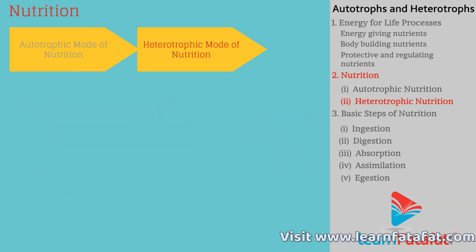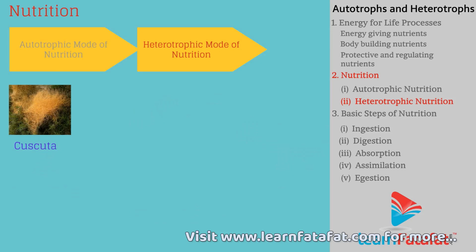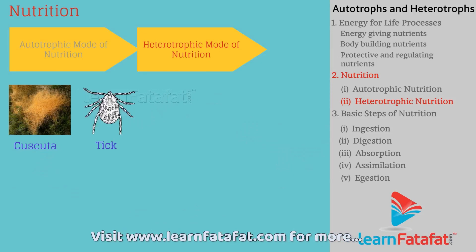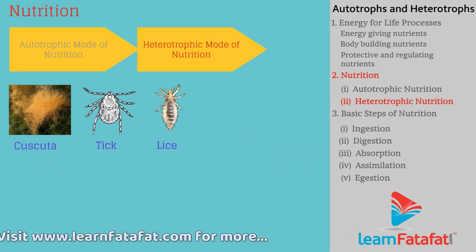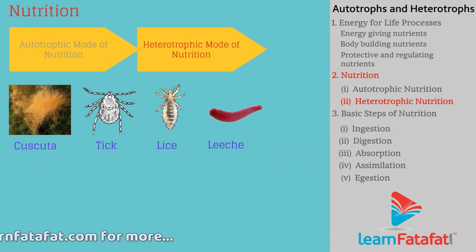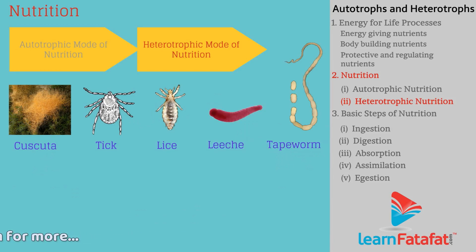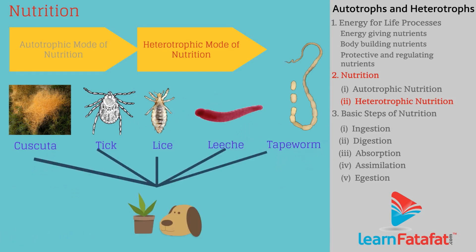Some animals and plants such as Cuscuta, lice, leeches, and tapeworms derive nutrition from other plants or animals without killing them but causing harm to the host plant or animal.